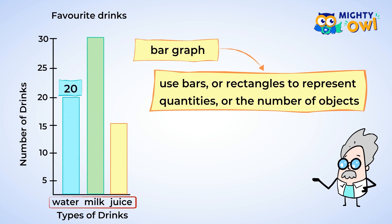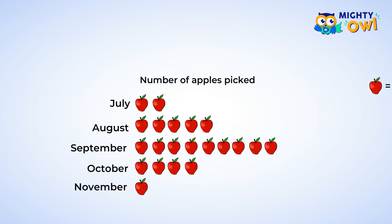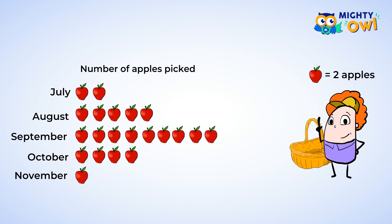Now check the other drinks. Milk goes up to 30, and juice goes up to 15. Graphs are a pretty neat way to show information. So let's look at a picture graph and answer some questions about it.